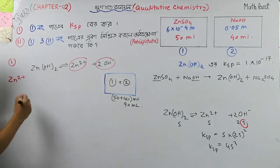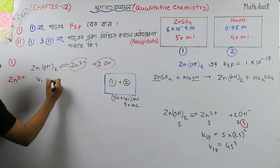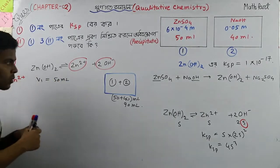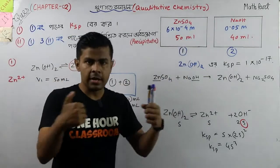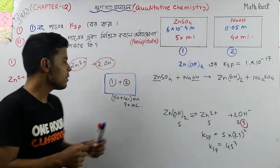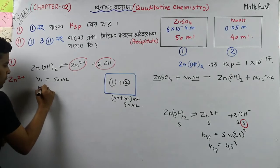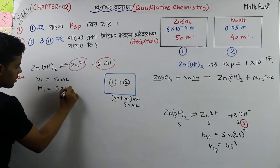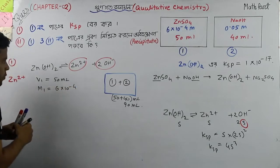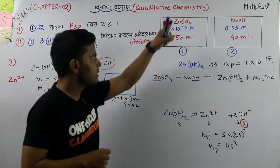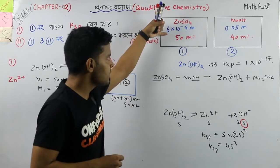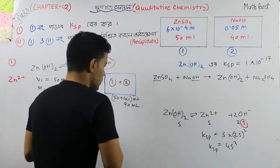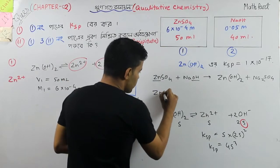Zinc 2 plus — what is V1? V1 means 50 ml. V1 means zinc 2 plus, which means 50 ml. And M1 means that concentration is the same. So what is 6×10 to the power minus 4? 6×10 to the power minus 4. It means zinc sulfate — it should be your concentration of mechanism, about 6×10 to the power minus 4. Let's use zinc sulfate to find V1.